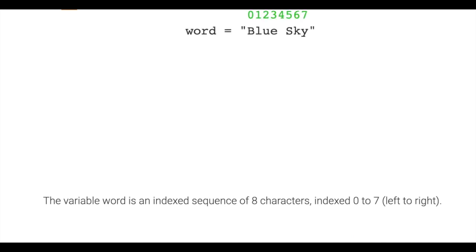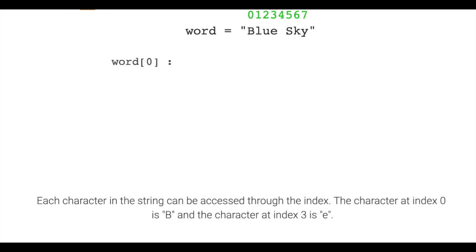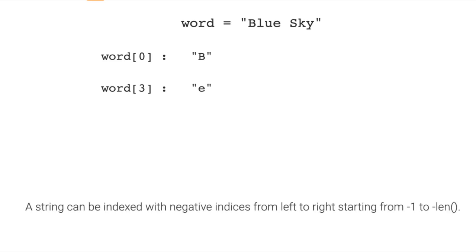The variable word is an index sequence of 8 characters, indexed 0 to 7 left to right. Each character in the string can be accessed through the index. The character at index 0 is b, and the character at index 3 is e. A string can also be indexed with negative indices, starting from negative 1 to negative 8.